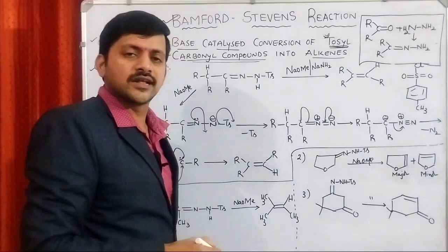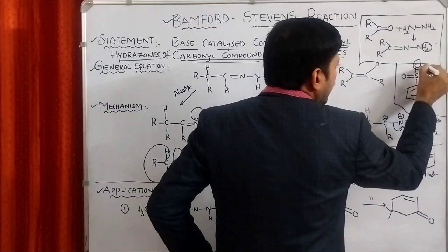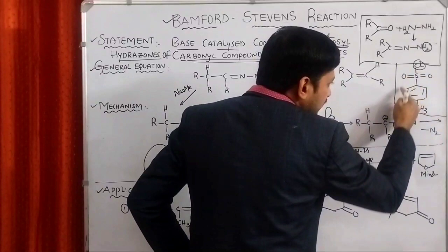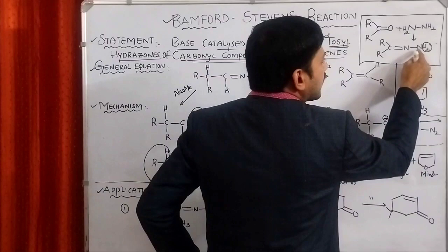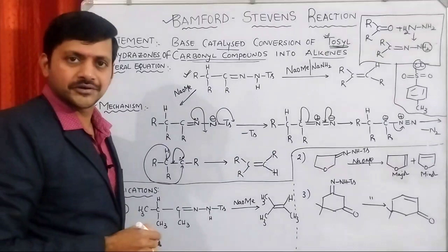Then this complete moiety, commonly called as tosyl group, para-toluene sulfonyl group, is directly attached to nitrogen. That is the representation of your reactant. Tosyl means T-S. T-S representation is methyl group, phenyl ring and SO2.